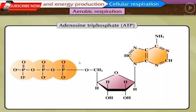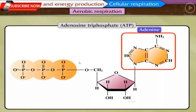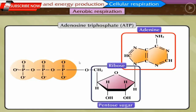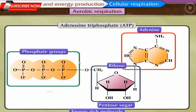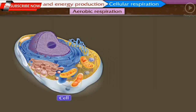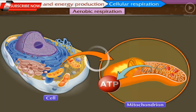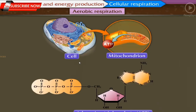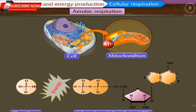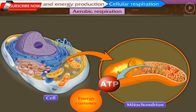ATP, or adenosine triphosphate, contains a nitrogenous compound adenine, a pentose sugar ribose, and three phosphate groups. It is an energy-rich molecule and energy is stored in the bonds by which the phosphate groups are attached to each other. These ATP molecules are stored in the cell. Whenever the cell needs energy, one phosphate bond breaks and energy is released — in this process, ATP gets converted into ADP, or adenosine diphosphate. Hence, ATP is called the energy currency of the cell.